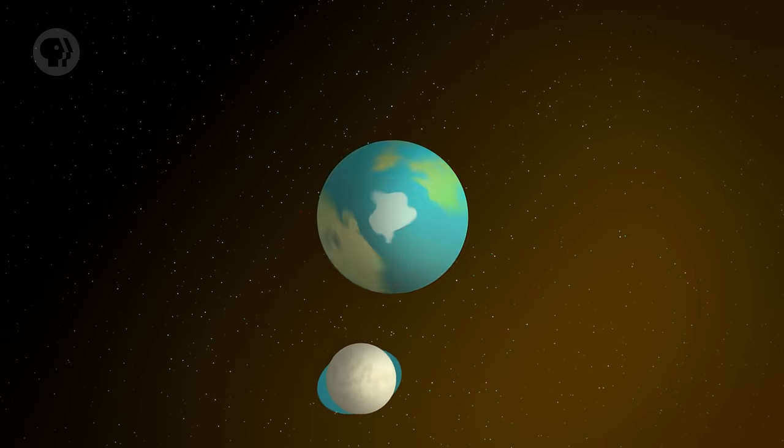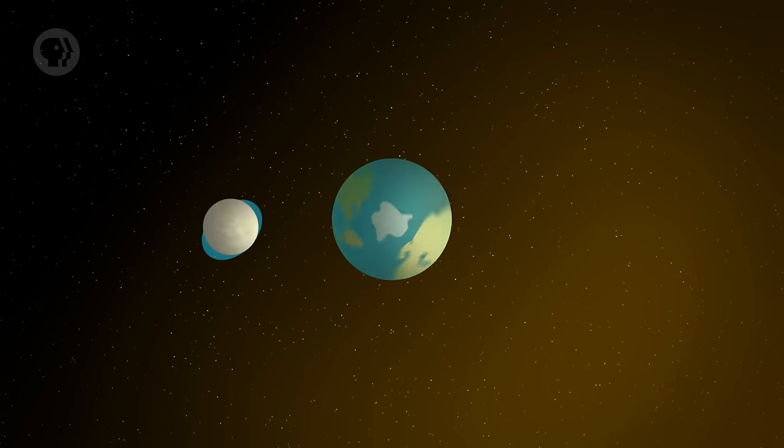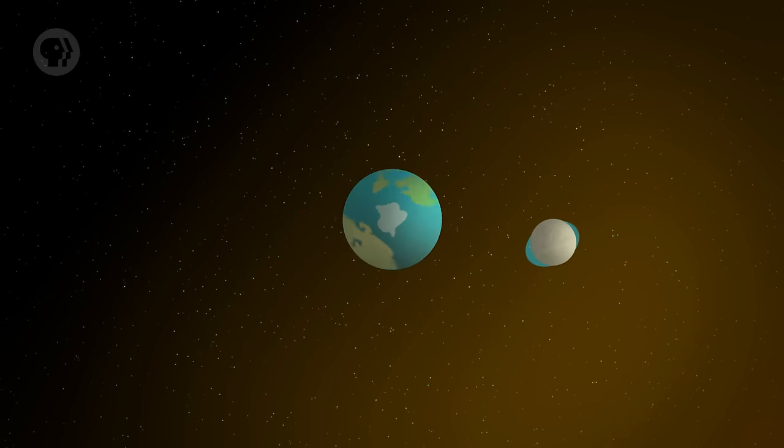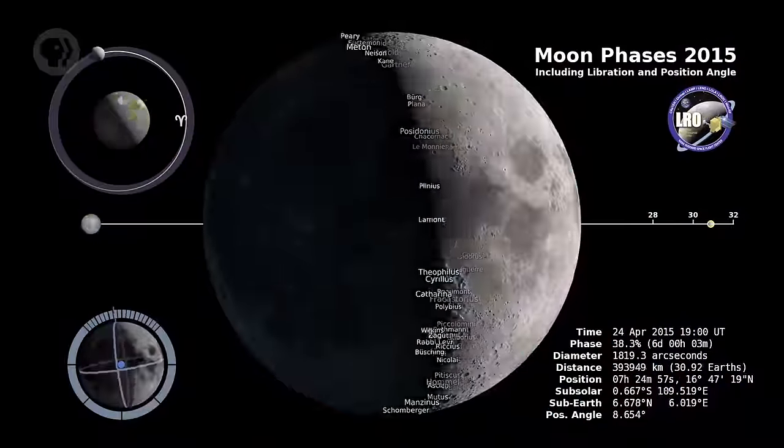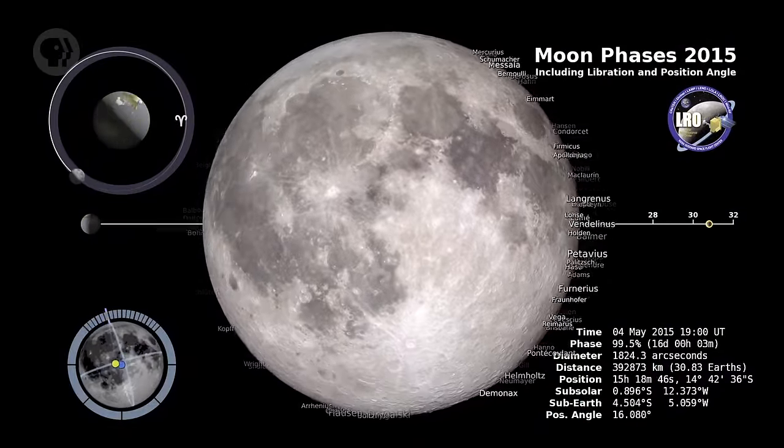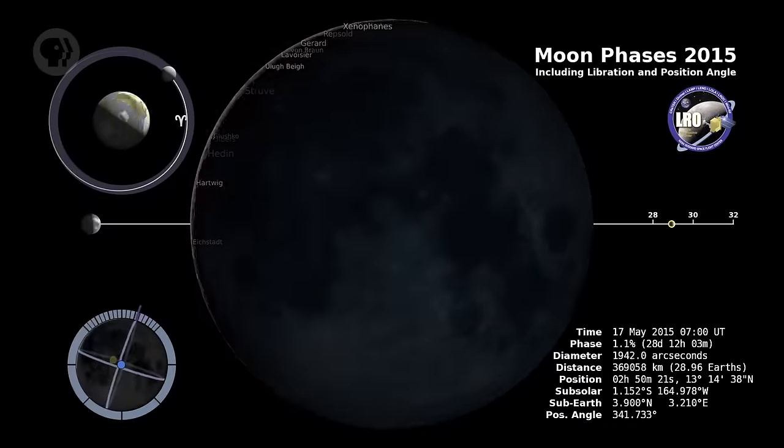Everything said about the Moon's tidal effect on the Earth works the other way too. The Moon feels tides from the Earth, and they're pretty strong because the Earth is more massive. Long ago, the Moon was closer to the Earth and spinning rapidly. The Moon's tidal bulges didn't align with the Earth, and Earth's gravity tugged on them, slowing the Moon's spin and moving it farther away. As it moved farther away, its orbital period got longer. Eventually, the Moon's rotation matched its orbital period, so the axis of the bulges pointed right at the Earth. That's why the Moon only shows one face to us — this is called tidal locking, and it's worked on nearly every big moon in the Solar System.